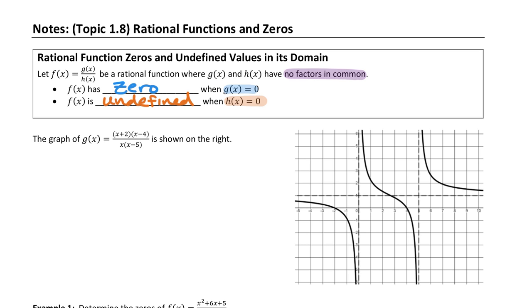We can look at these functions and apply Bobo, Bott, and Betsy to talk about the horizontal asymptote. We can also look at the function to discuss the zeros and the undefined values.